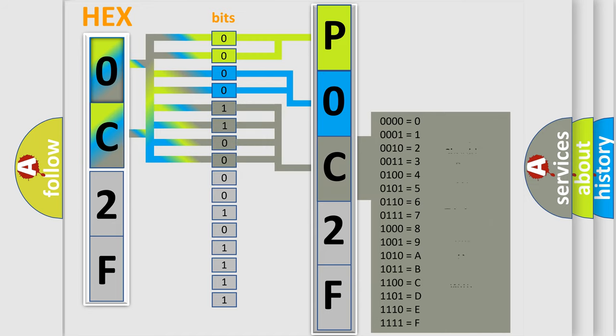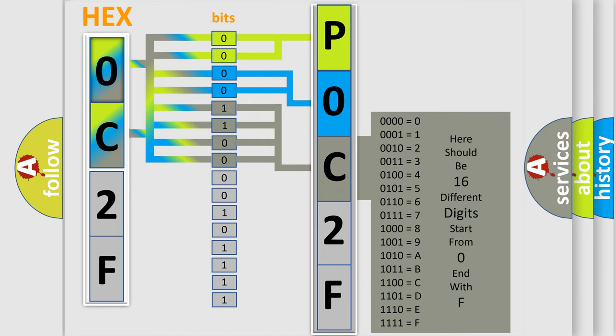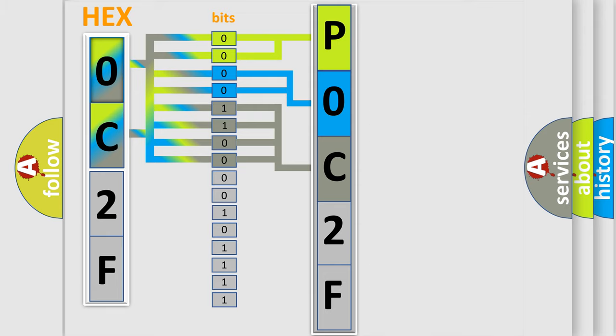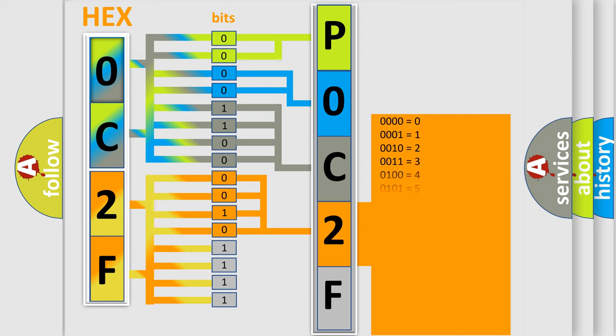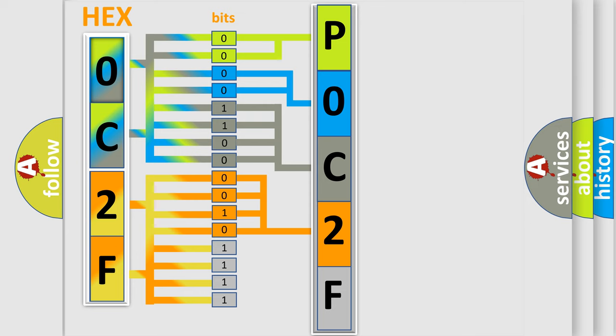The second byte is composed of a combination of eight bits. The first four bits determine the fourth character of the code, and the combination of the last four bits defines the fifth character. A single byte conceals 256 possible combinations.